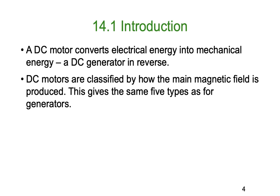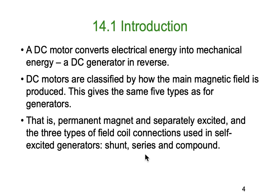DC motors are classified by how their main magnetic field is produced, giving the same five types as for generators: permanent magnet, separately excited, and three types of self-excited field coil connections — shunt, series, and compound, with compound being a combination of shunt and series.